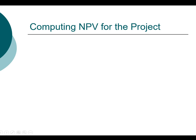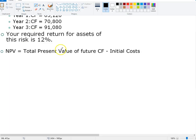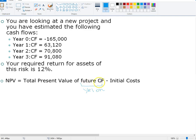Now let's compute the net present value for this project using the example you copied down earlier. NPV is the total present value of future cash flow minus the initial cost. Since future cash flow means cash flow starting from year one on, we take cash flows from year one, year two, and year three and compute their present value. The required return is 12%, so that is our discount rate. Since the cash flows have different amounts, this is an uneven cash flow, and the easiest way is to treat this as a multiple cash flow problem and use the calculator.